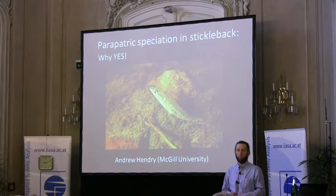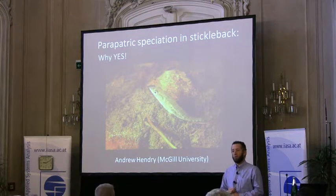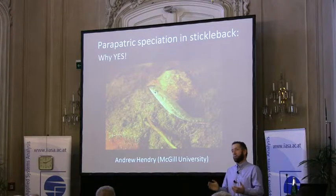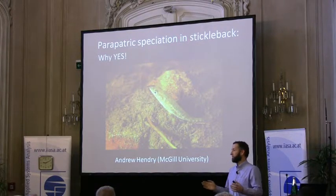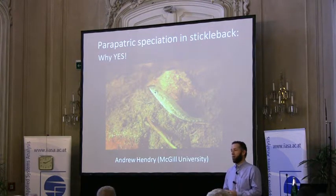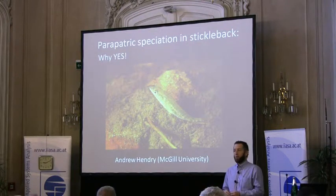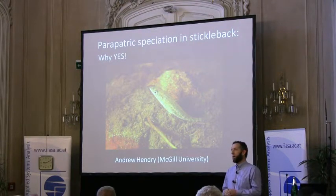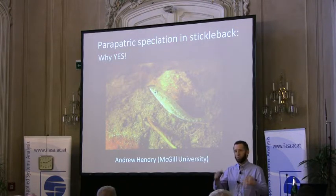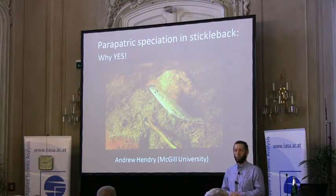The most relevant prior talk was Dan Bolnik's talk about sympatric speciation and stickleback. As he demonstrated, you have all of these mechanisms that you would think would drive sympatric speciation, and yet there doesn't seem to be much, if any, progress toward it in stickleback. What I'm going to ask then is what happens when you add a little bit of space into these mechanisms of divergent selection and potential assortative mating.